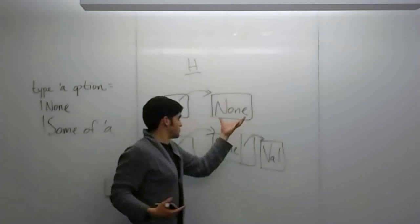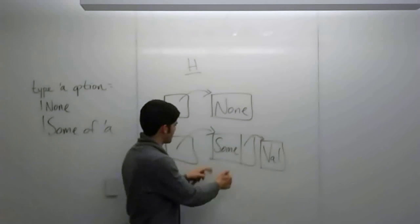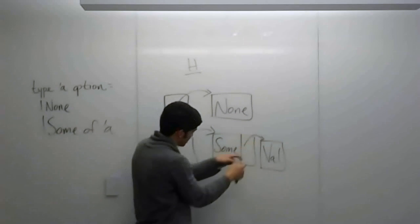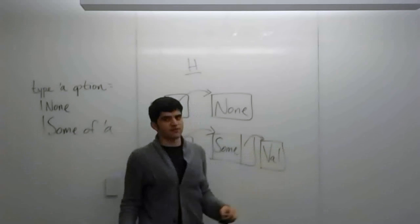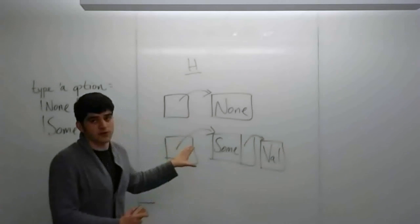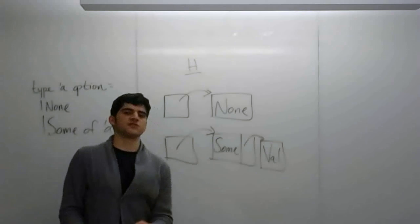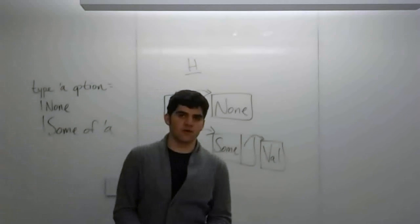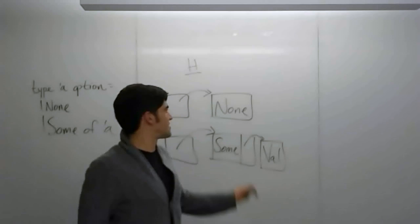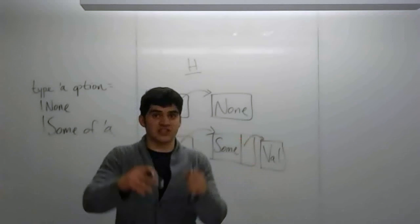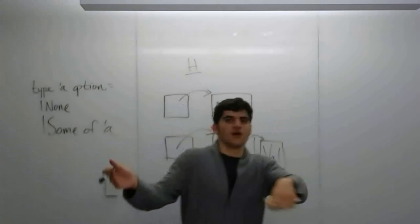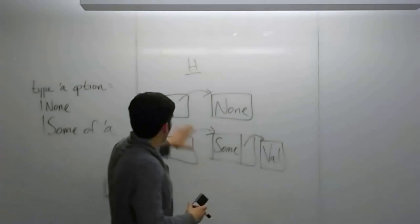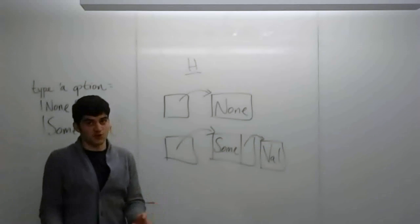So none is just a cell with just the word none. And then some, you have a cell for some, and then an adjacent cell is pointing to whatever value it is. That's how it looks under the hood. But because options are so common when we're working, especially with queues and all of our examples, this can get messy if we have to keep on drawing none boxes and some constructor middle boxes for all of the times that we use options in queues, which is many.